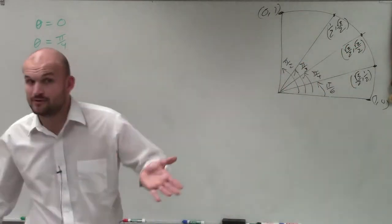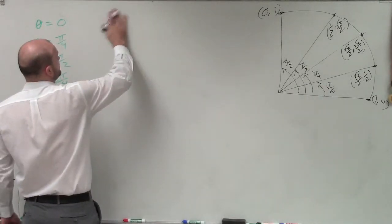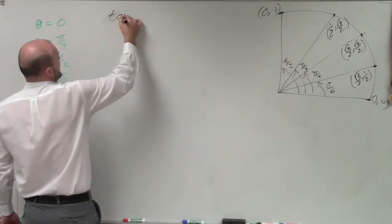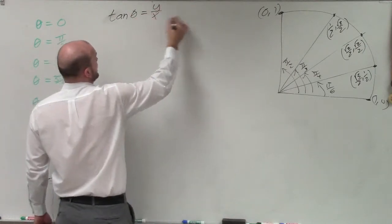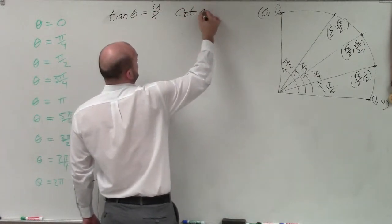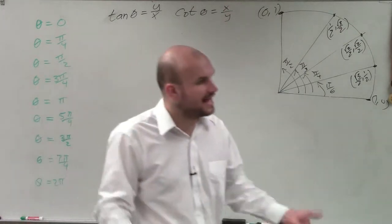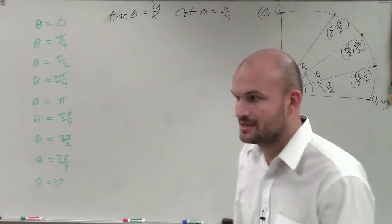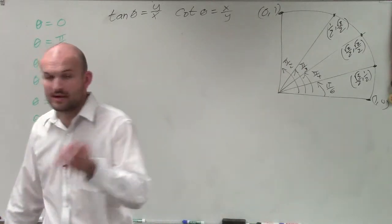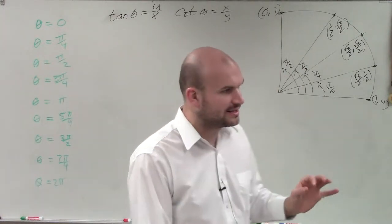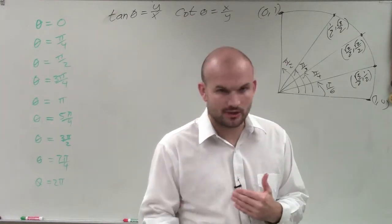If I said evaluate for cotangent and tangent, we need to remember that the tangent of theta equals y over x, where the cotangent of theta equals x over y. That is when we have an angle that intersects the unit circle — if it intercepts the unit circle and we have that coordinate point, to evaluate for our angle, we just take the ratio of our x and y coordinates.